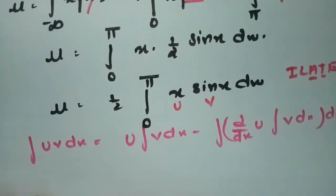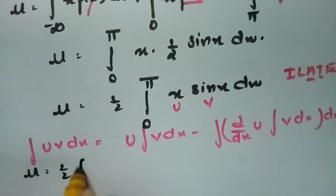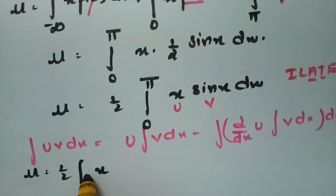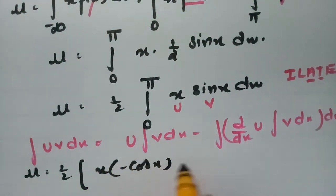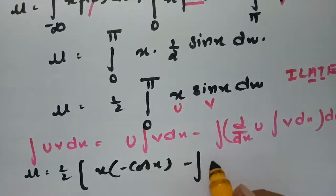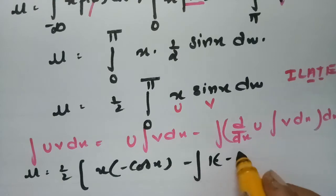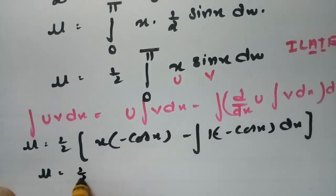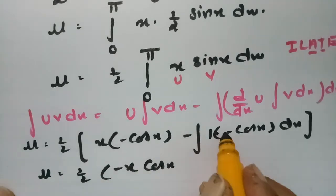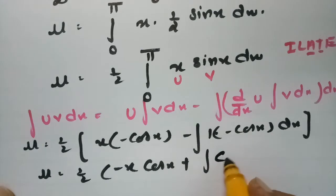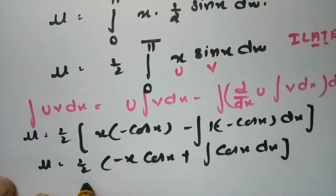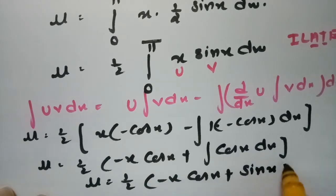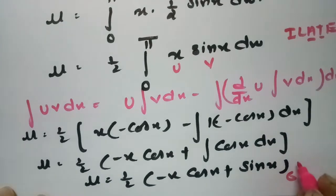Substituting: u = x, v = sin(x). The integral of sin(x) is −cos(x). So we get μ = (1/2)[x·(−cos x) − integral of 1·(−cos x) dx] = (1/2)[−x·cos(x) + integral cos(x) dx] = (1/2)[−x·cos(x) + sin(x)], evaluated from 0 to π.